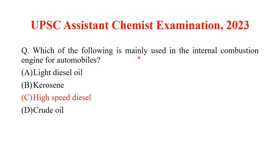Which of the following is mainly used in internal combustion engines for automobiles? The answer is either petrol or gasoline, but since it is not in the option, even high speed diesel is used in internal combustion engines. So, the answer is option C.